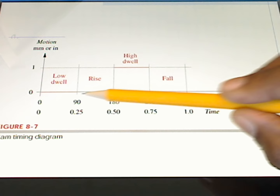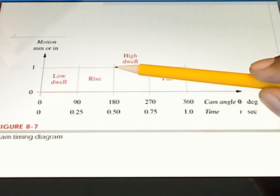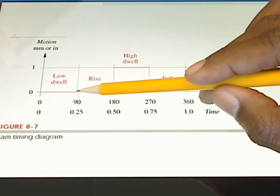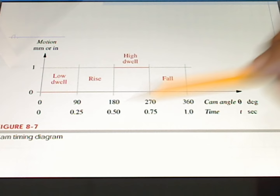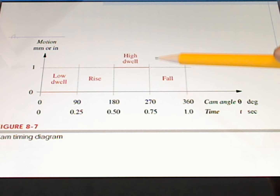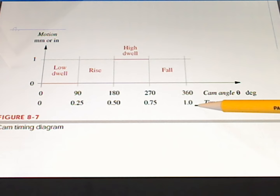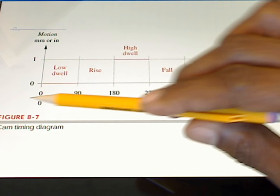For the next 90 degrees, the follower rises from zero to one unit (millimeter or inch). It remains there for another 90 degrees, then falls. Our purpose is to find a function to get from the low point to the high point, and another to get from the high point back to the low point. Additionally, the entire cycle is completed in one second, though we could change the timing by spinning the cam slower or faster.